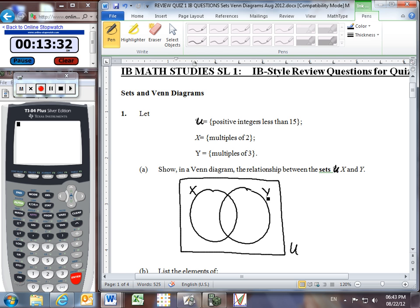Inside X are all of the multiples of 2. Remember, we're looking at positive integers less than 15. Less than 15 goes all the way up to 14. So what are the multiples of 2, the positive integers that are multiples of 2 going up to 14? That's 2, 4, 6, 8, 10, 12, and 14.